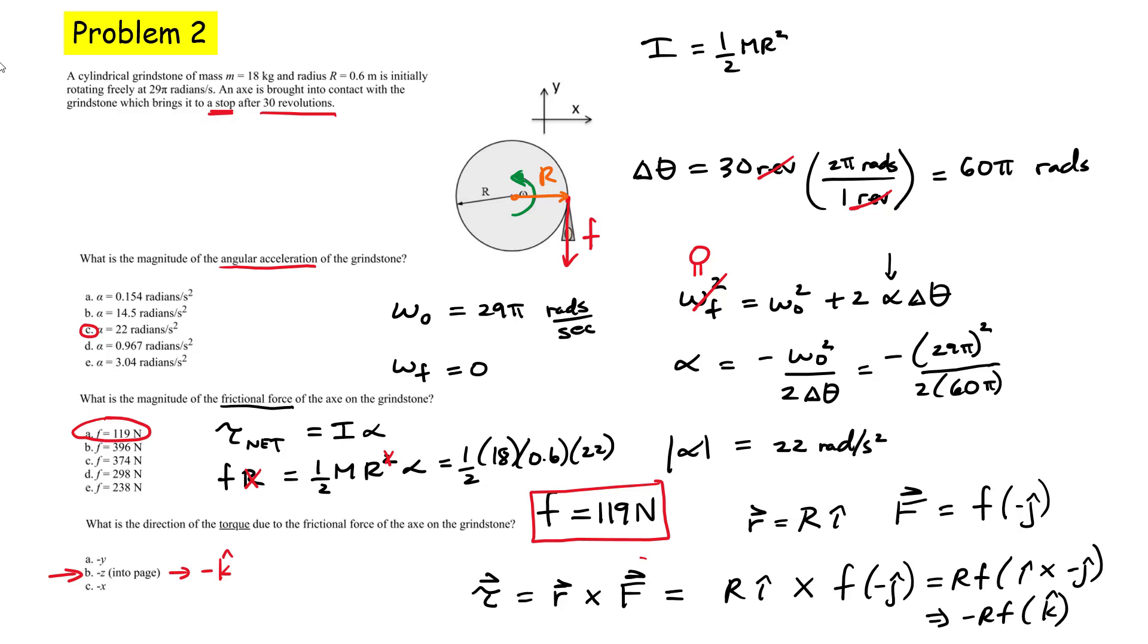You could have also simply found the direction of this by using something called the right hand rule. You take your fingers and you place them along the first vector. So take your hand, your right hand and place your fingers along this vector. And then you curl your fingers toward the second vector. And you should find that your thumb points into the page when you do that. That's it for this problem.